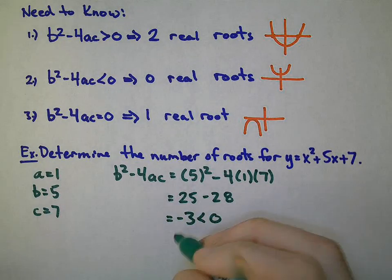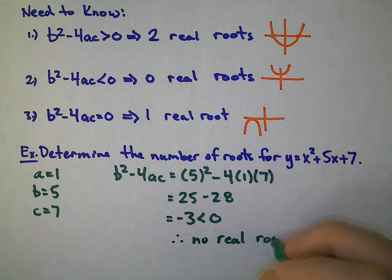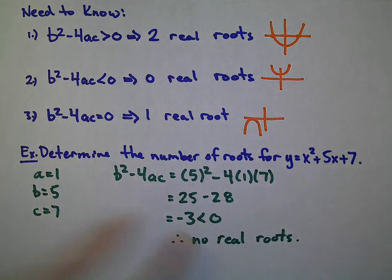What does that mean? Therefore, this parabola has no real roots. Very generic example, but this is really the only type of question I will ask when it comes to the discriminant.